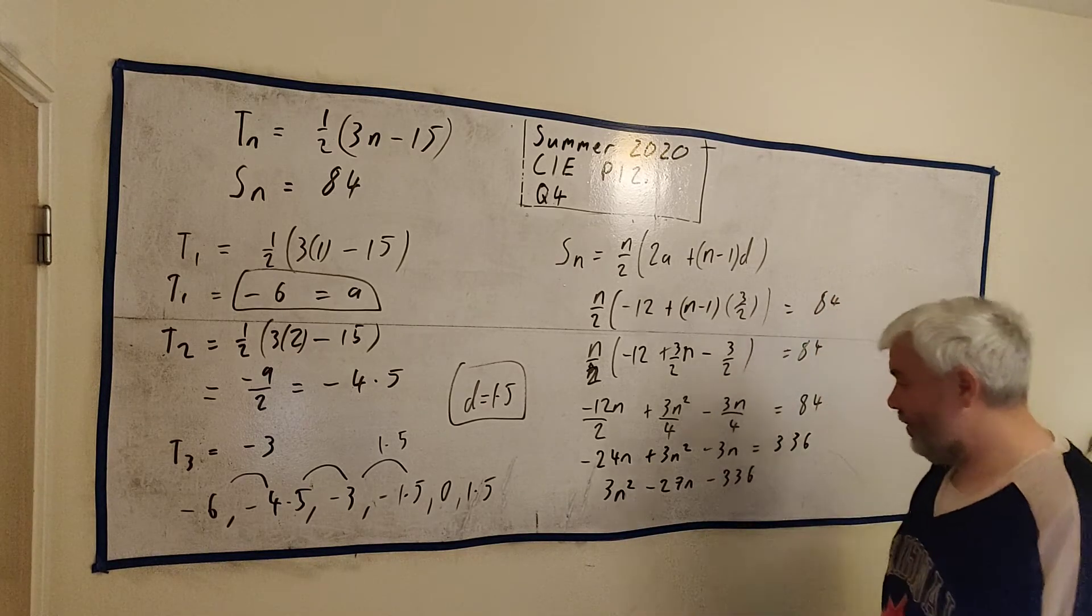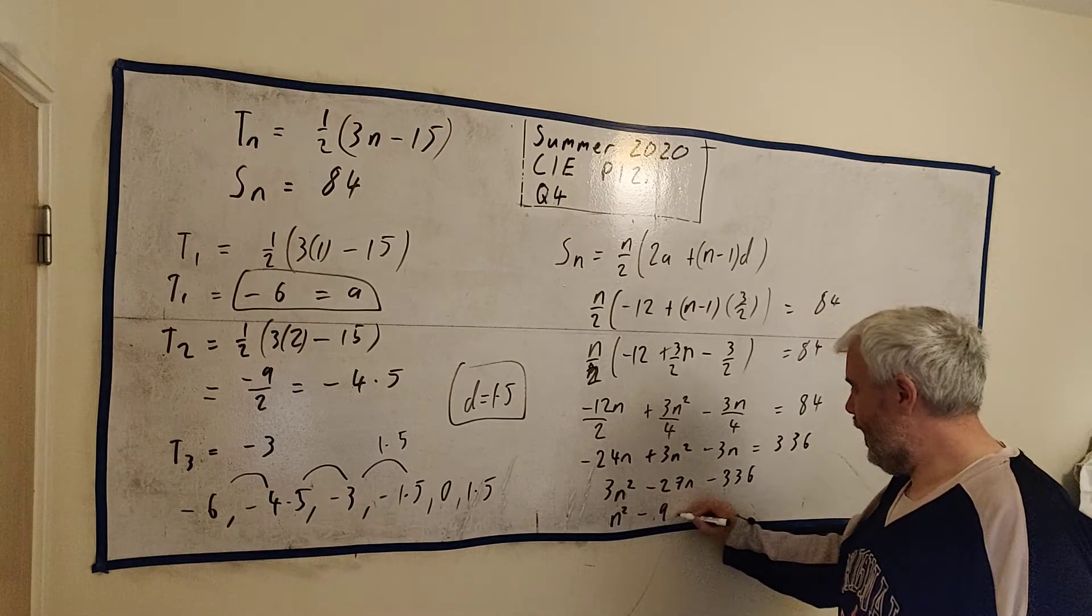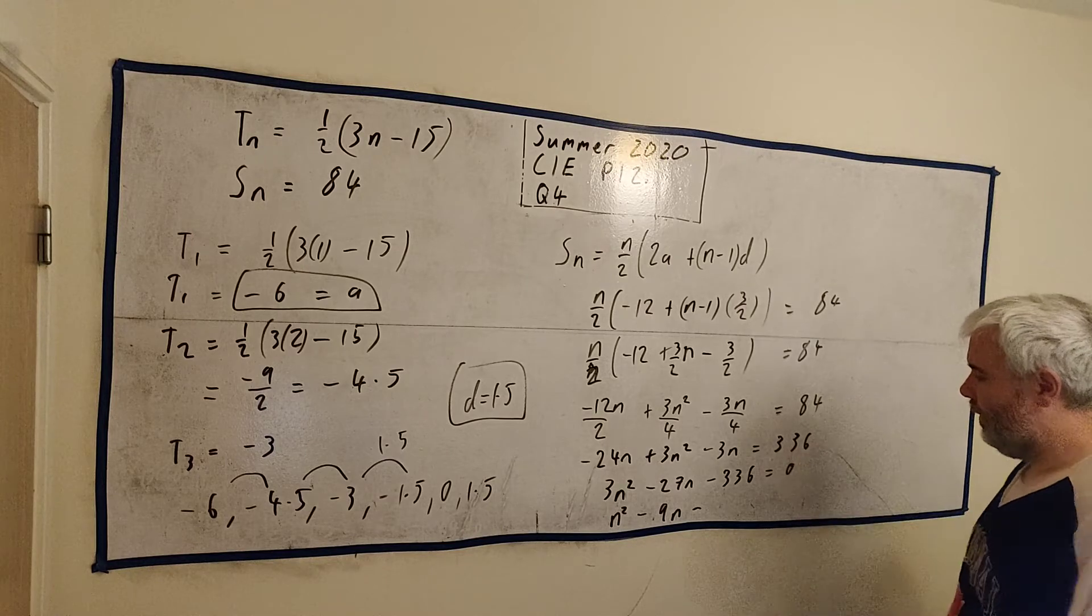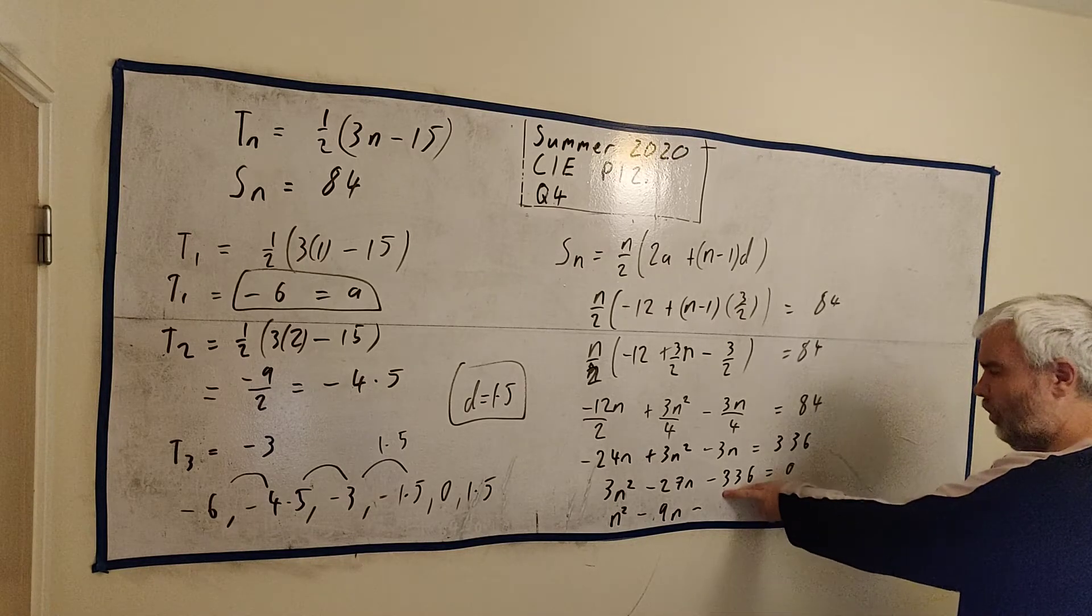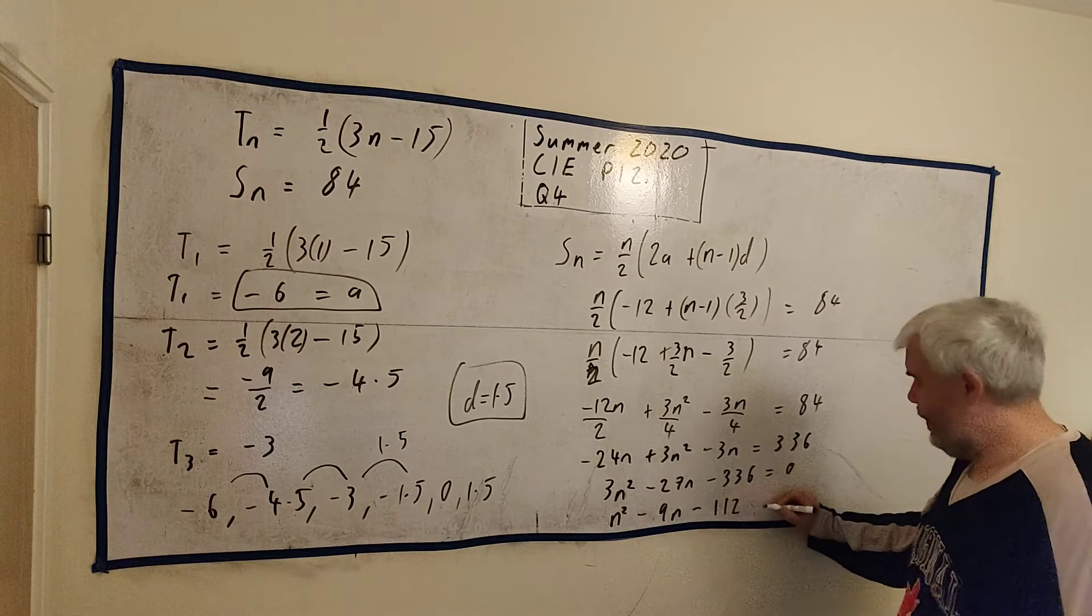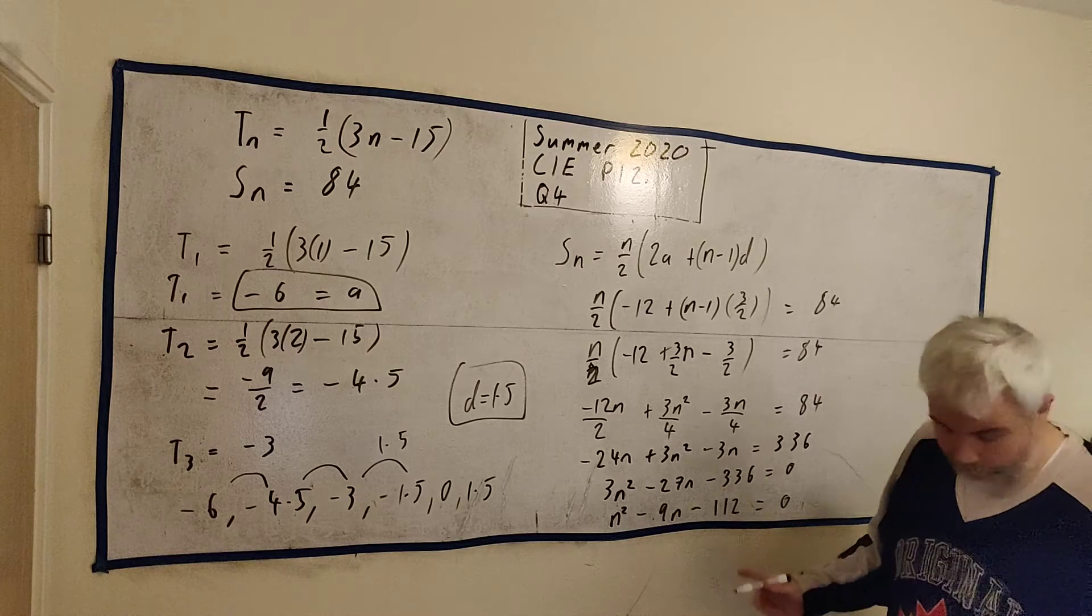It looks like 3 divides into all of these. So, one last time, N squared minus 9 N minus, let's put equals 0 there. 112, it looks like. Check your calculators for all of these. So we're left with something like this.